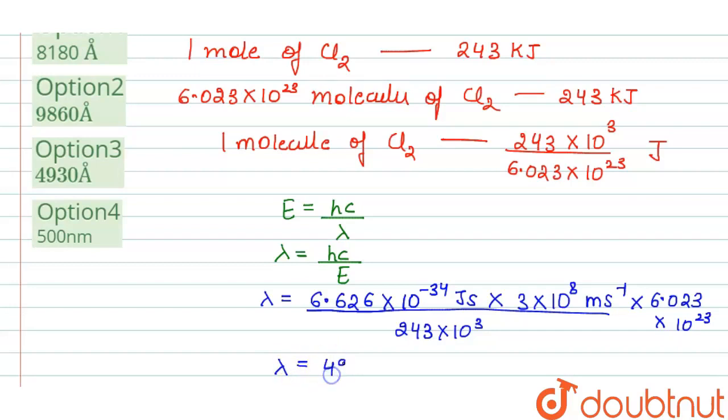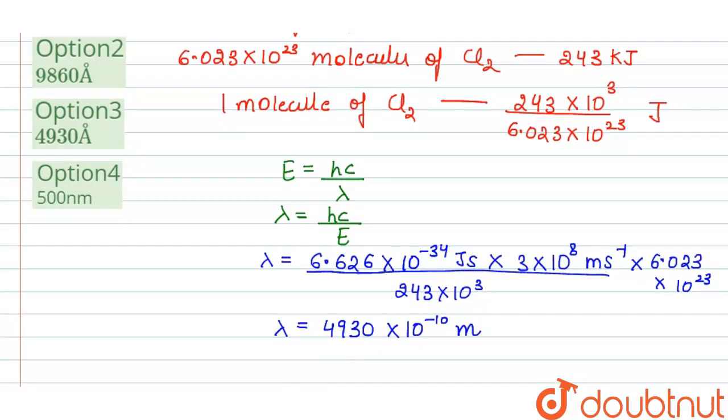it comes out to be 4930 times 10 raised to the power of minus 10 meters, or we can write it as 4930 angstrom, since 1 angstrom is equal to 10 raised to the power of minus 10 meters. So this is the wavelength.